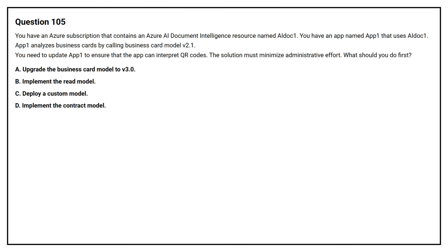Question number 105. You have an Azure subscription that contains an Azure AI Document Intelligence resource named AI doc 1. You have an app named App 1 that uses AI doc 1. App 1 analyzes business cards by calling the business card model version 2.1. You need to update App 1 to ensure that the app can interpret QR codes. The solution must minimize administrative effort. What should you do first?